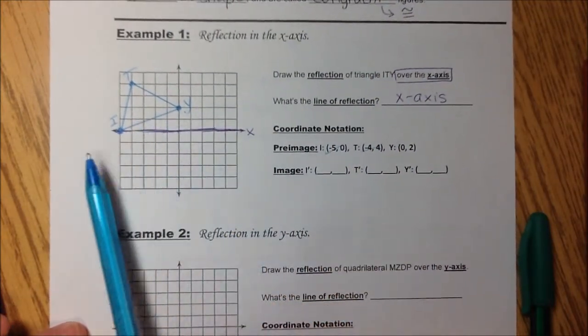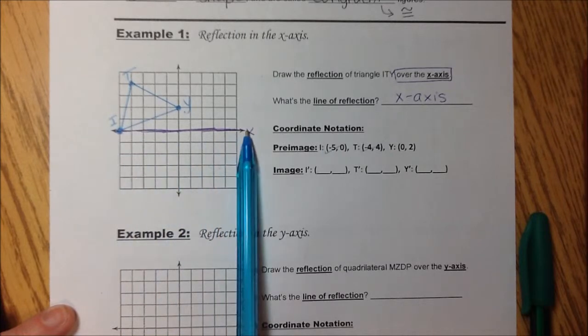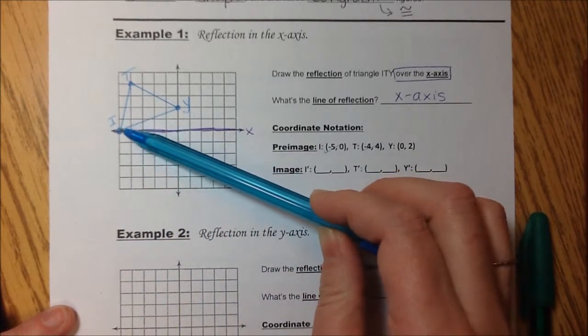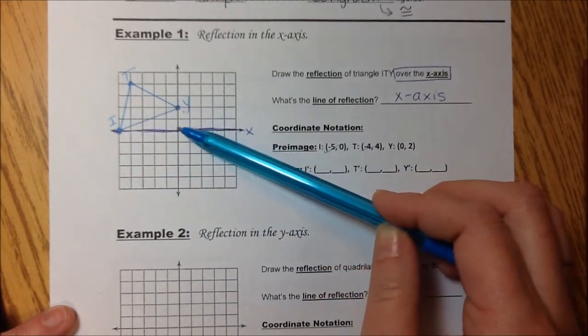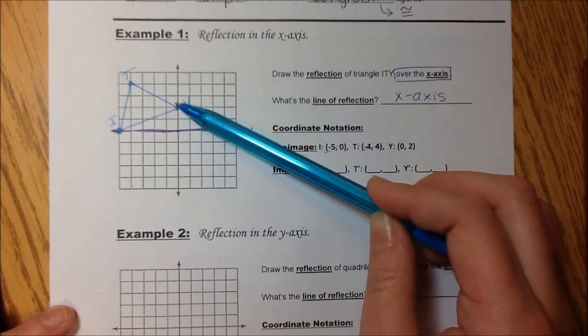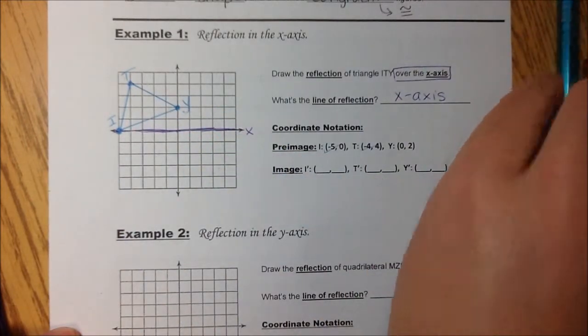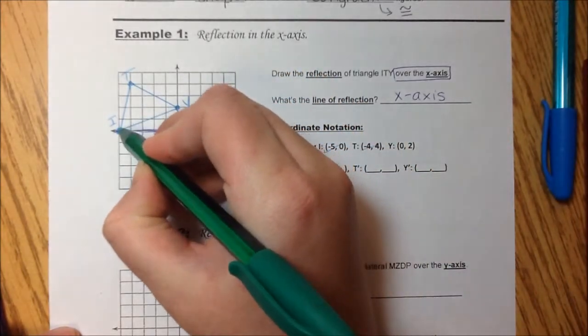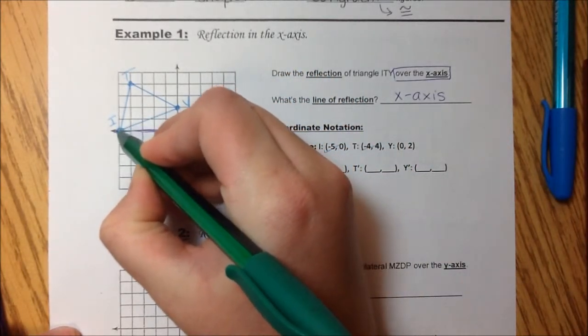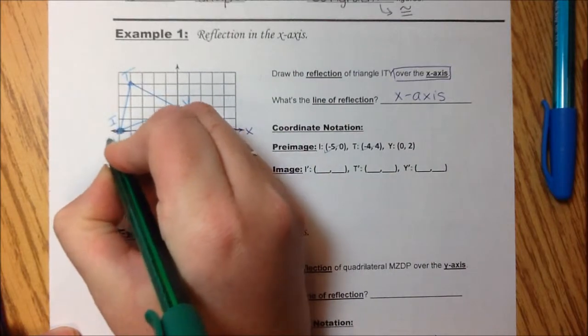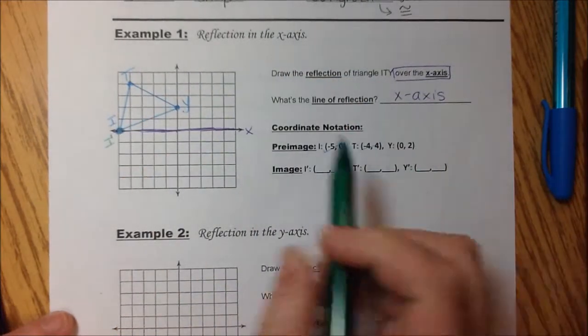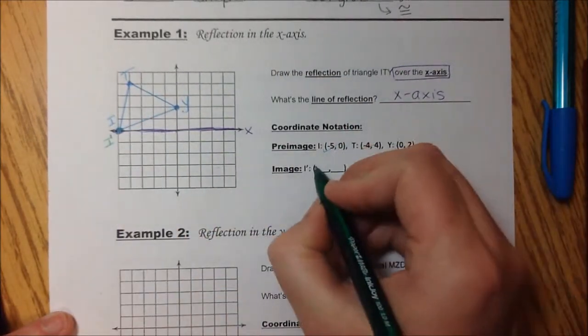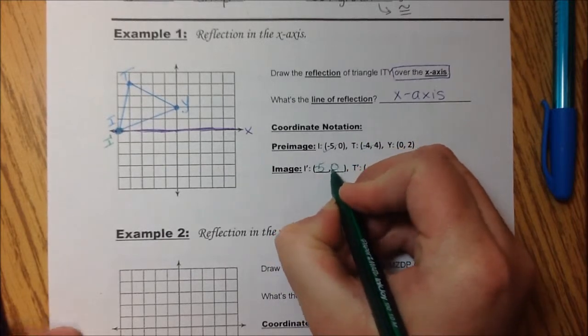Okay, and now if our line of reflection is the x-axis, then these points are going to be the same distance on this side as they are that side. So I'm going to get green. And so this one, it's going to stay. It's on the line, so it's going to stay there. So this is also going to be I prime. And it's negative 5, 0.